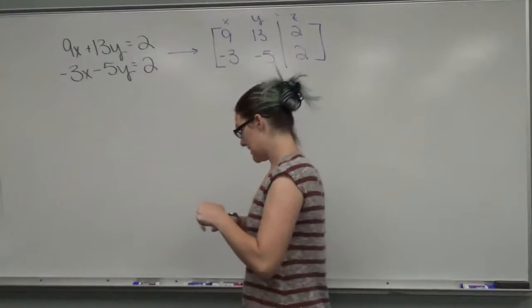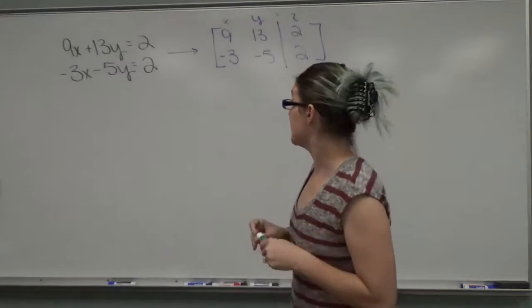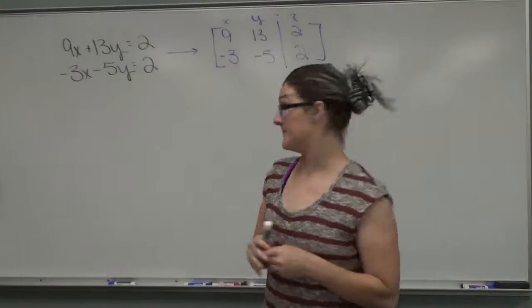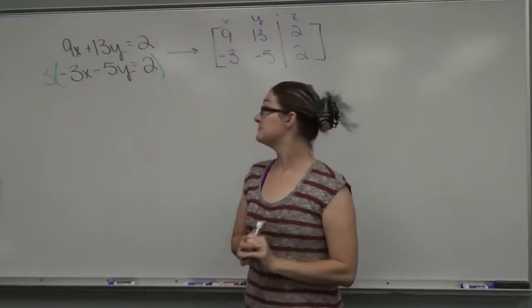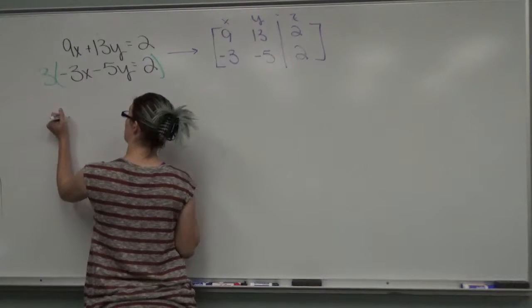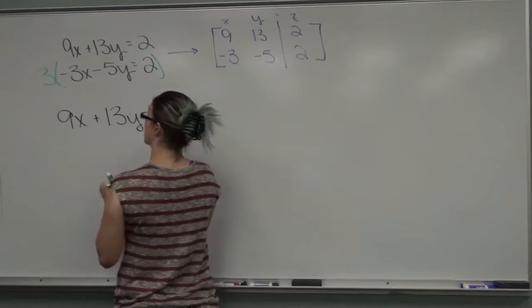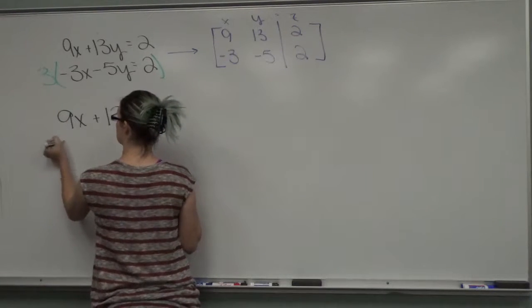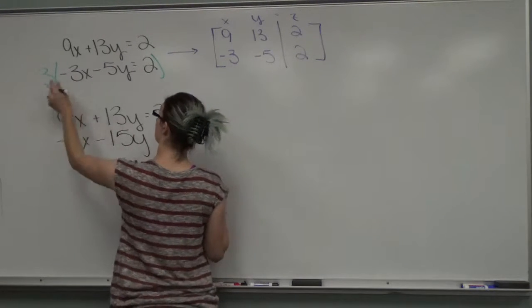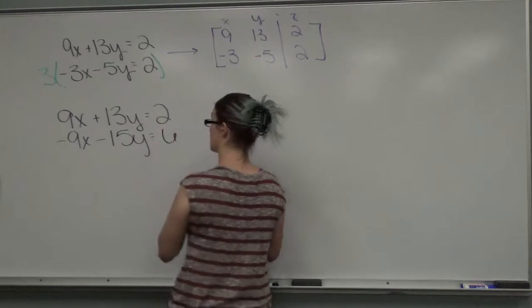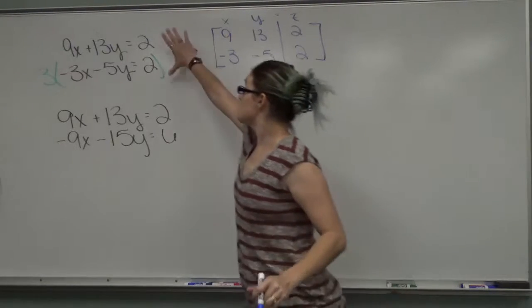For elimination with normal equations, your goal is to make one of the variables the same number but the opposite signs, so that when you add them, that variable is eliminated. That's our overall goal. So if we were doing elimination, the x's would go away very nicely if I multiplied the second one by three. So if I came over here and said multiply by three, the first equation would stay the same. I always rewrite them in pairs. The second equation would become three times negative three, which is negative 9x, three times negative 5y, which is negative 15y, and three times two, which is six.